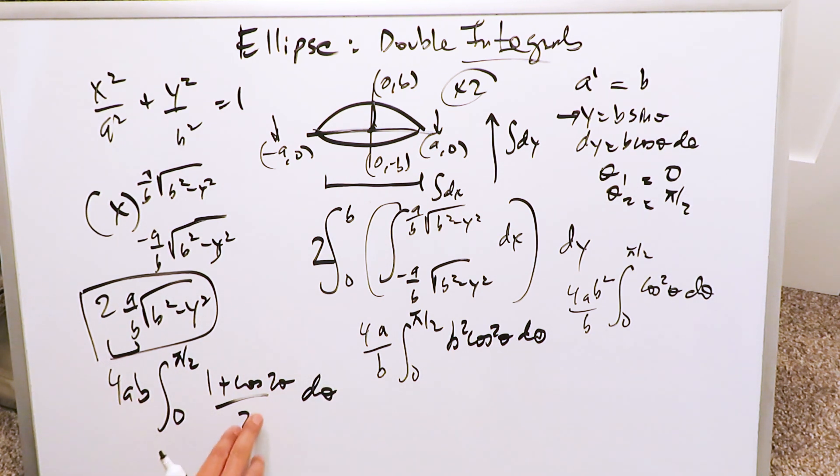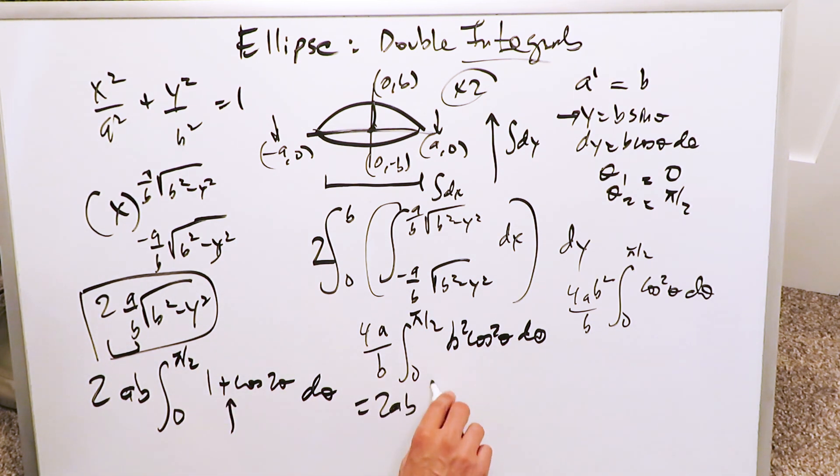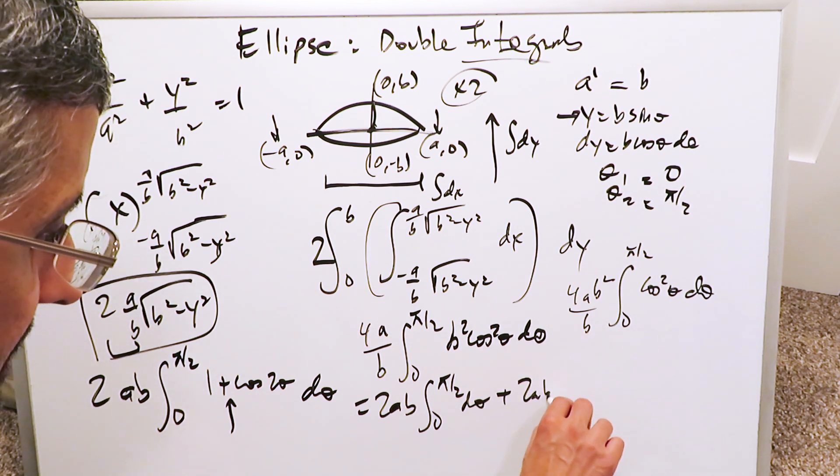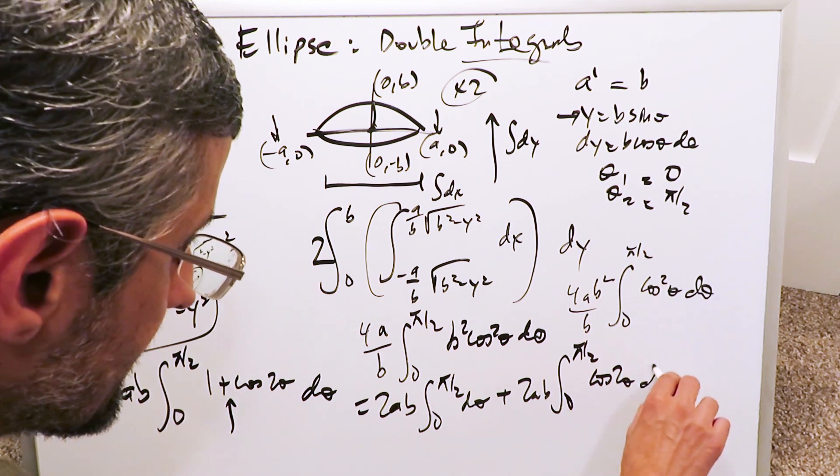Divided by 2, and this 4 can cancel out right now, and you can simplify it. Here you'll end up having a 2ab, and I'm bringing it right here. Separate everything across this positive sign. You have here a 2ab integral 0 pi over 2 d theta plus 2ab integral 0 pi over 2 cosine 2 theta d theta.